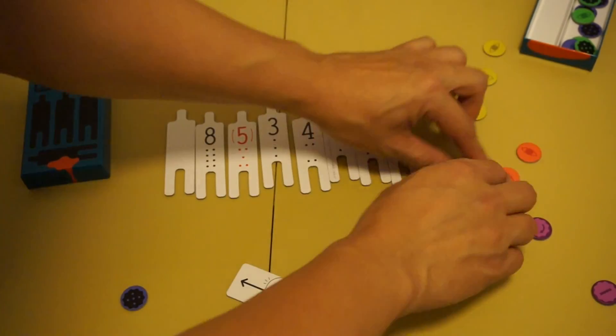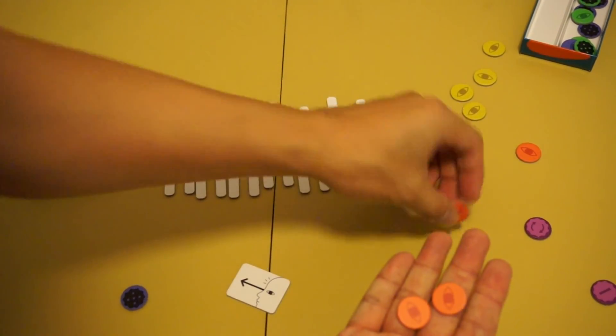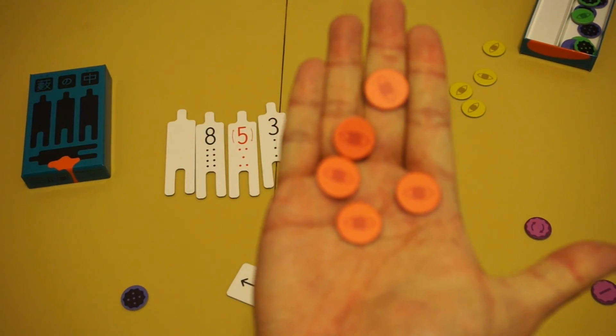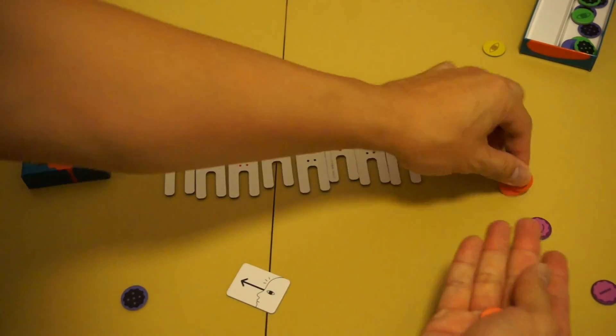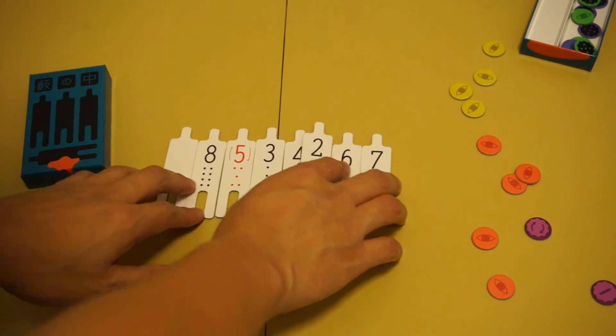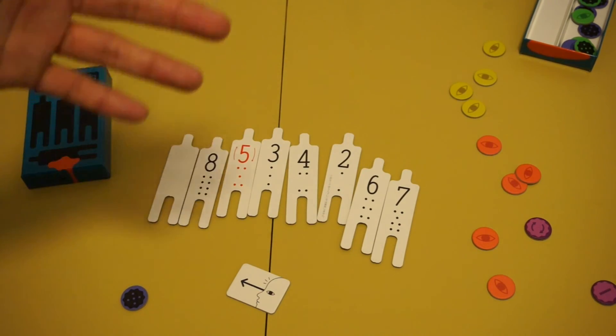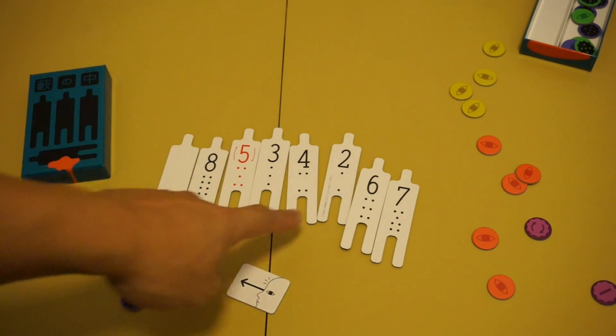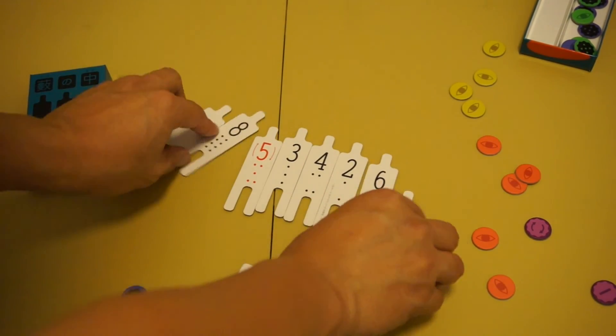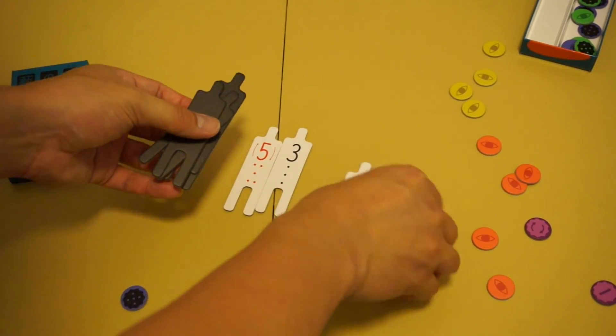Each player will also have five of these accusation chits, five of them, this will be used throughout the game. So how do you play the game? At the start, this plays two to four. So at the start if you're playing four player, none of this will be out. If you're playing three or two players, the number two and number eight will be out. So if you're playing four players, you take all these things, you shuffle them, and then you randomly will deal out one to each of the players.